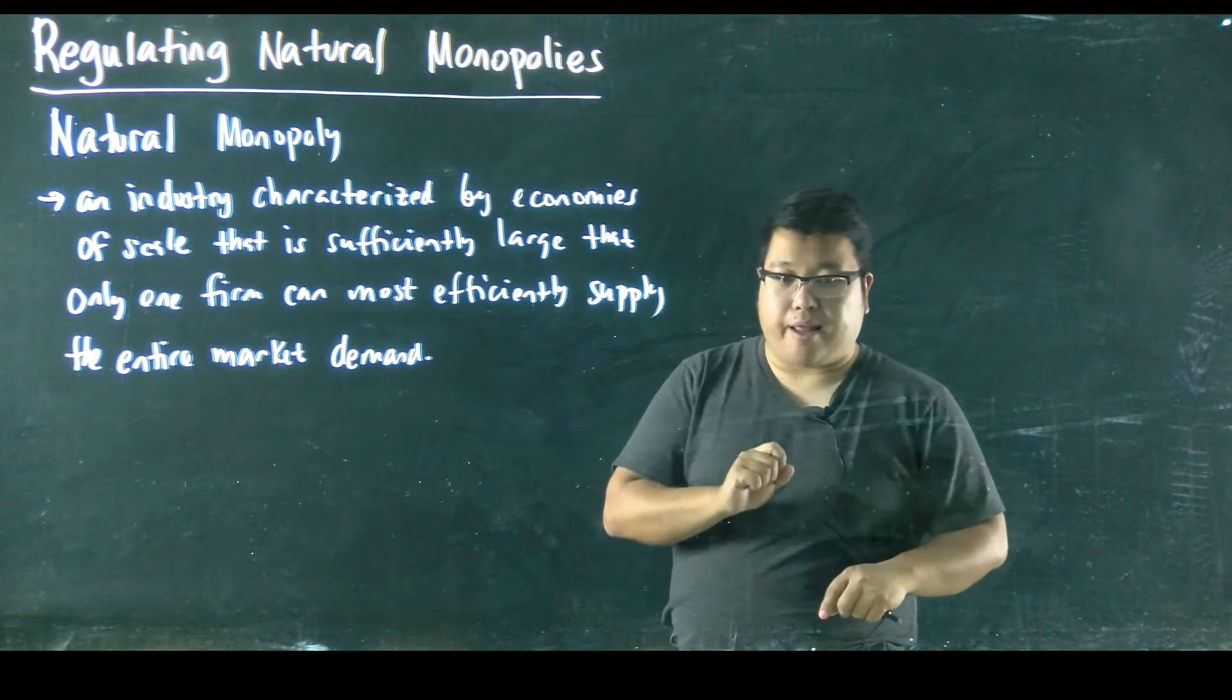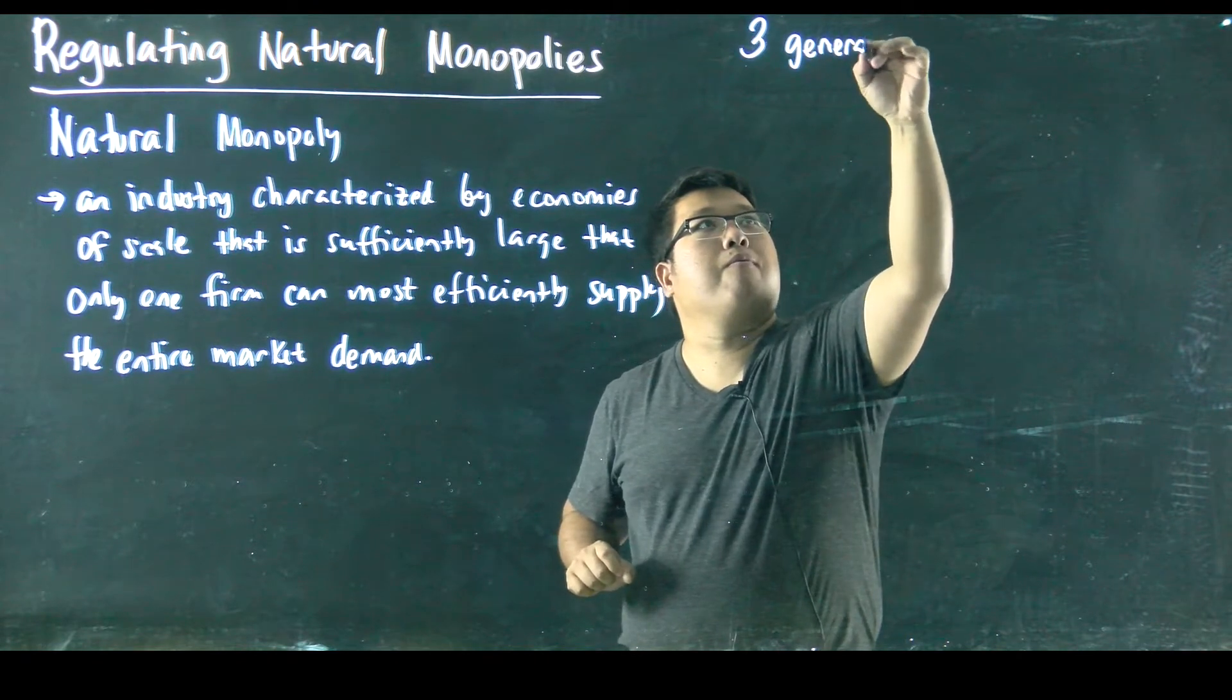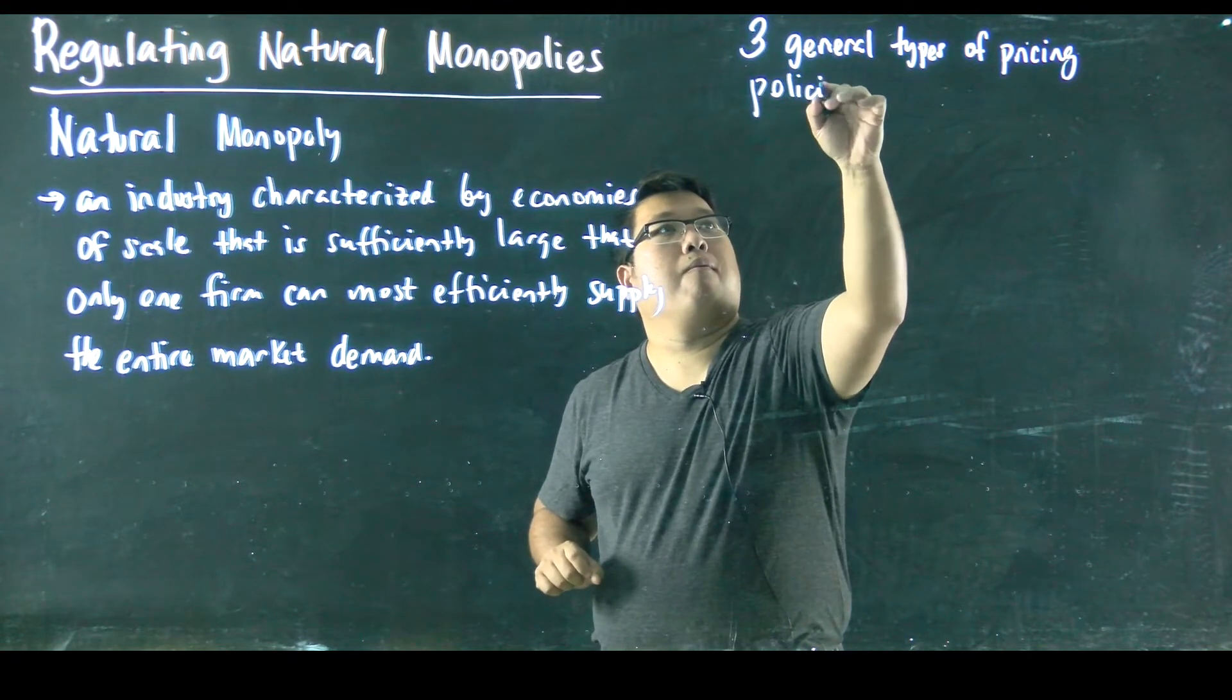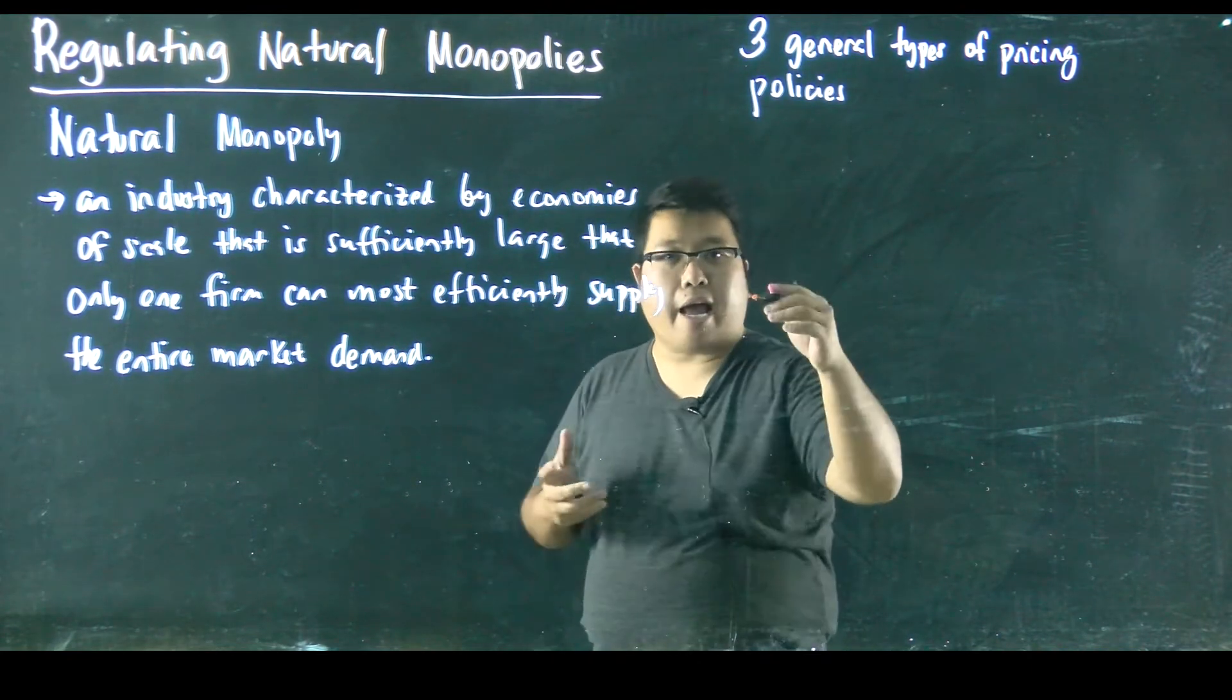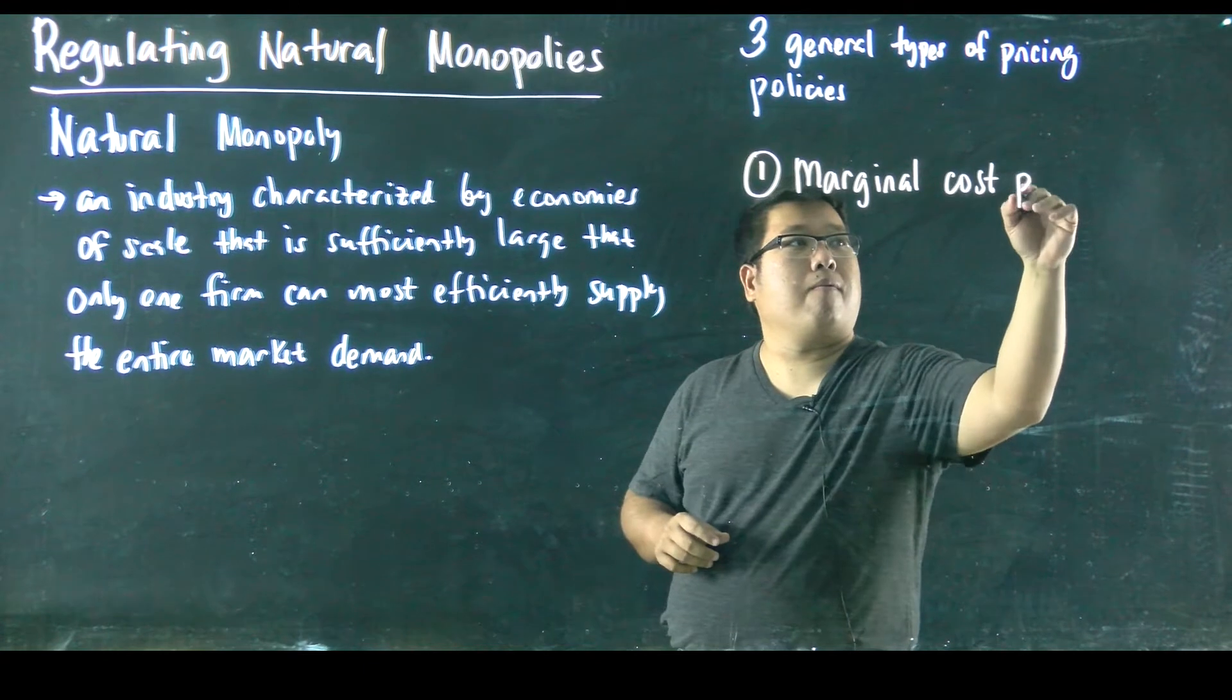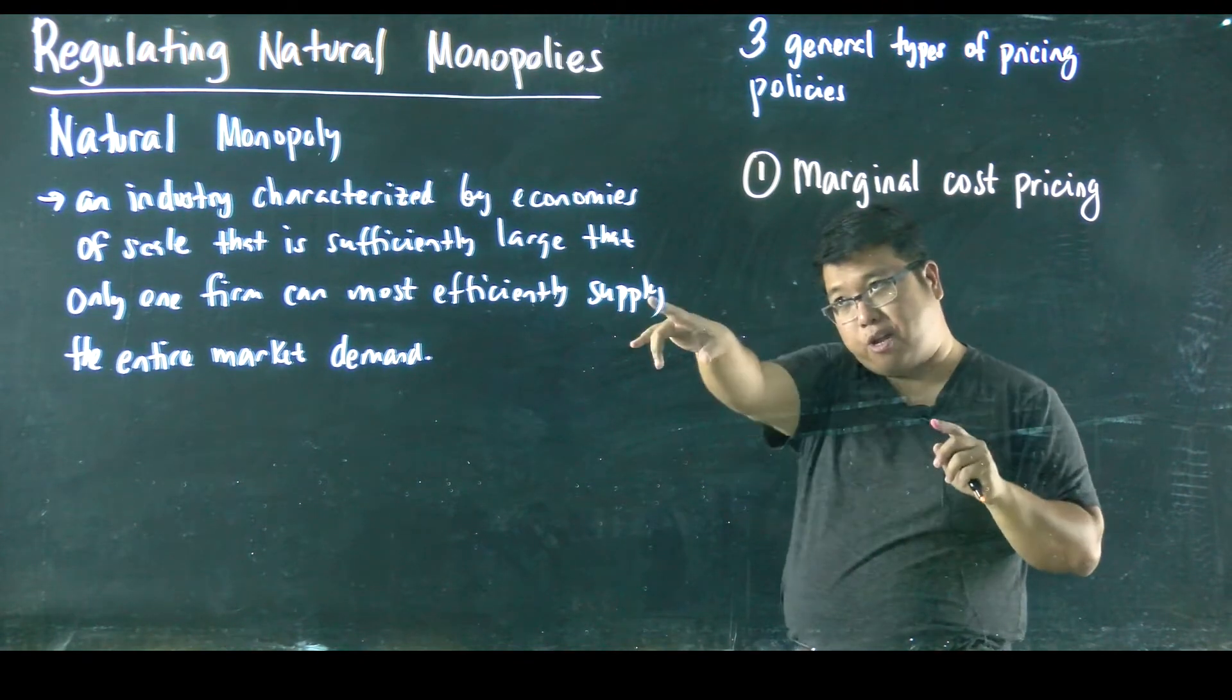There are three approaches to regulate a natural monopoly. So you have here three general types of pricing policies for a monopoly. So the first pricing type is what we call marginal cost pricing. So I will need to sketch a graph to illustrate marginal cost pricing, and I'm going to do that graph right here.